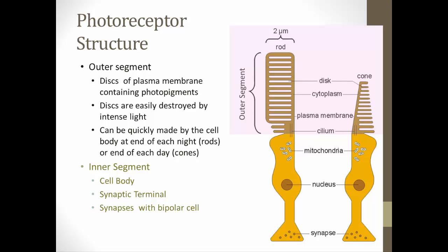For rods, that replacement happens at night; for cones it happens at the end of the day. The inner segment consists of the cell body, which makes the photopigments. It also has a synaptic terminal that synapses with the bipolar cells, and then the bipolar cells synapse with the ganglion cells.